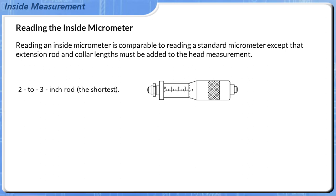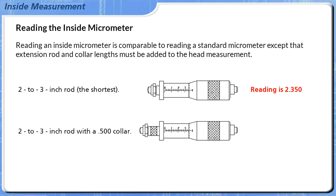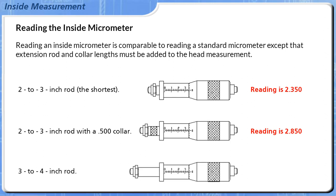The first example shows a 2 to 3 inch rod, which gives a measurement of 2.350. The second example is the same 2 to 3 inch rod with a half-inch collar added, making the reading 2.850. The last example shows a 3 to 4 inch rod added, making this measurement 3.350.